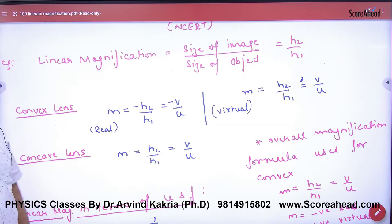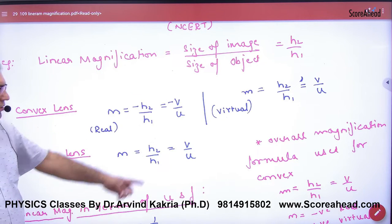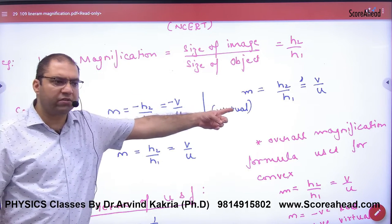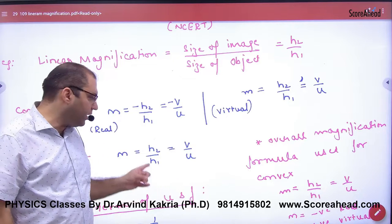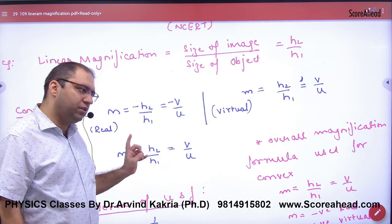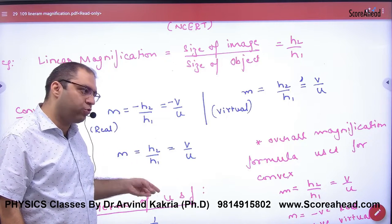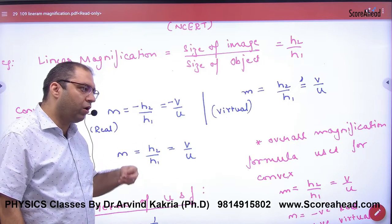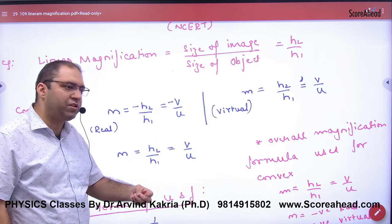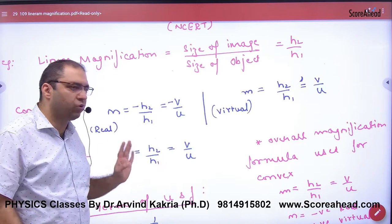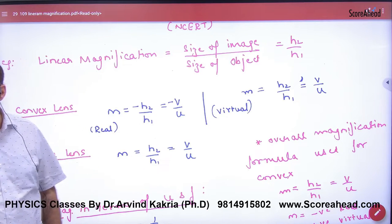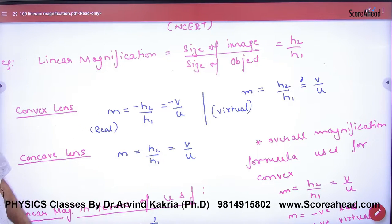In a concave lens, the same case applies. The virtual image case is also the same — the image is upright, so h2 by h1 is positive. Object and image are on the same side, so magnification is v by u — positive. So this is the magnification formula.